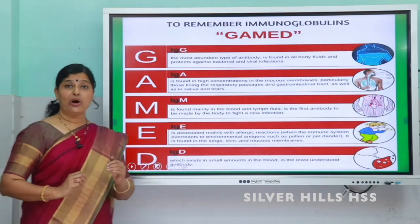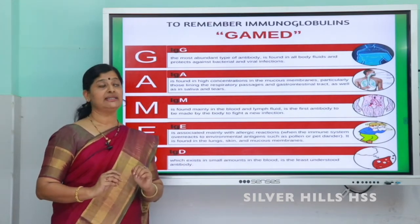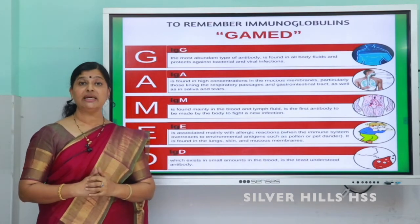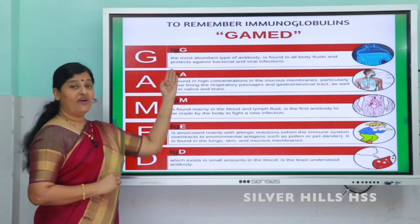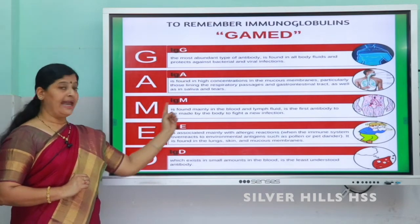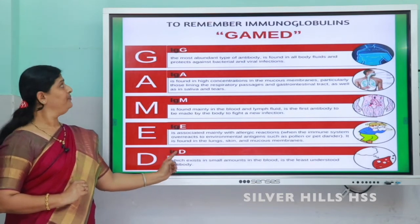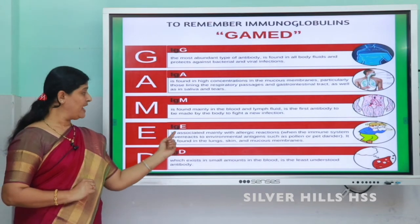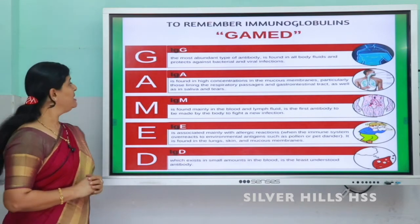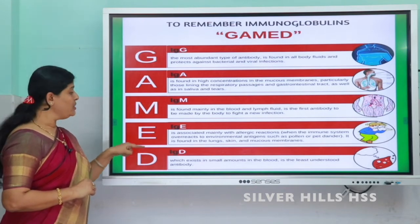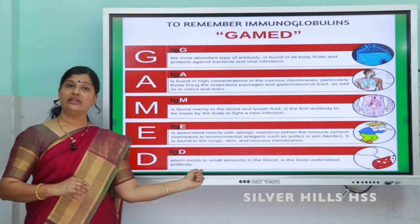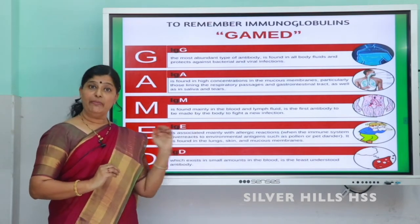Antibodies are of five types. There are five types of antibodies: IgG, IgA, IgM, IgE, and IgD. 'Ig' stands for immunoglobulin, which is another term for antibody. There is a shortcut to remember these five types — just remember the word GAMED, and add 'Ig' to each letter to get all five immunoglobulins: IgG, IgA, IgM, IgE, IgD.